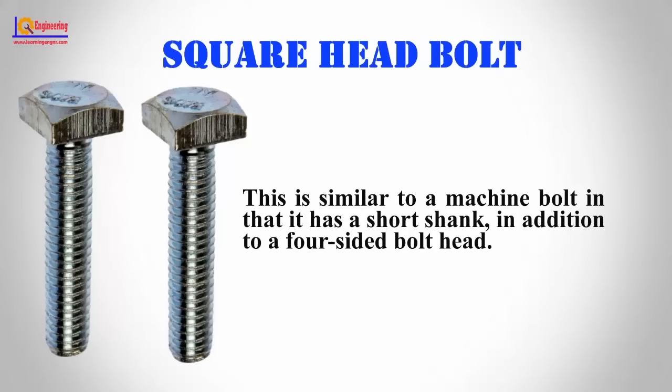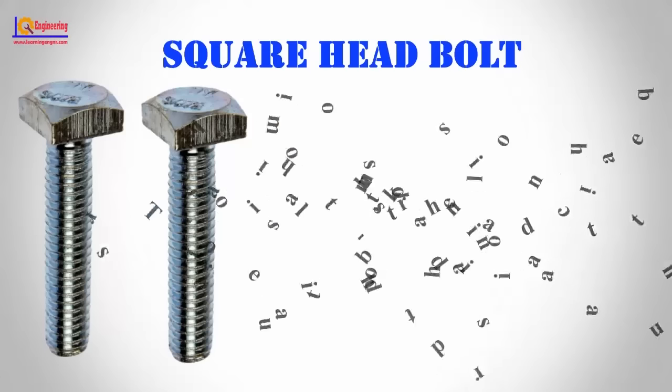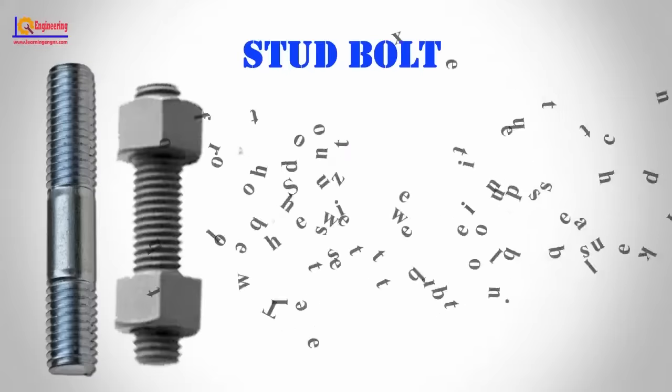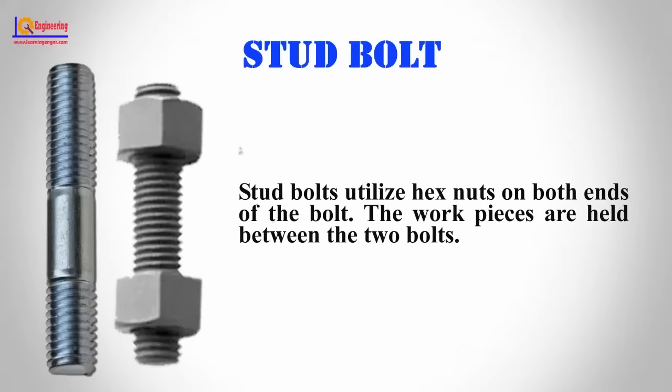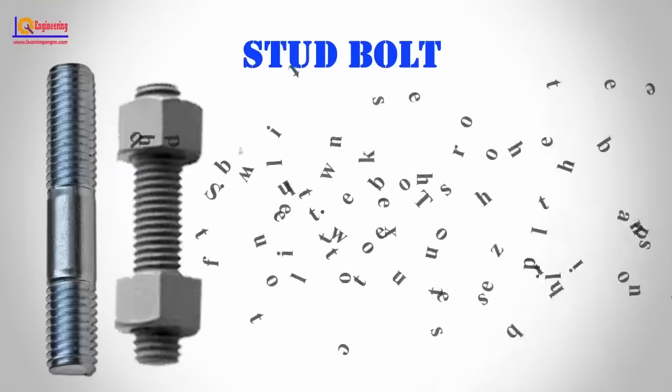Square Head Bolt: A square head bolt is similar to a machine bolt in that it has a short shank, in addition to a four-sided bolt head. Stud Bolt: Stud bolts utilize hex nuts on both ends of the bolt, and the workpieces are held between the two nuts.